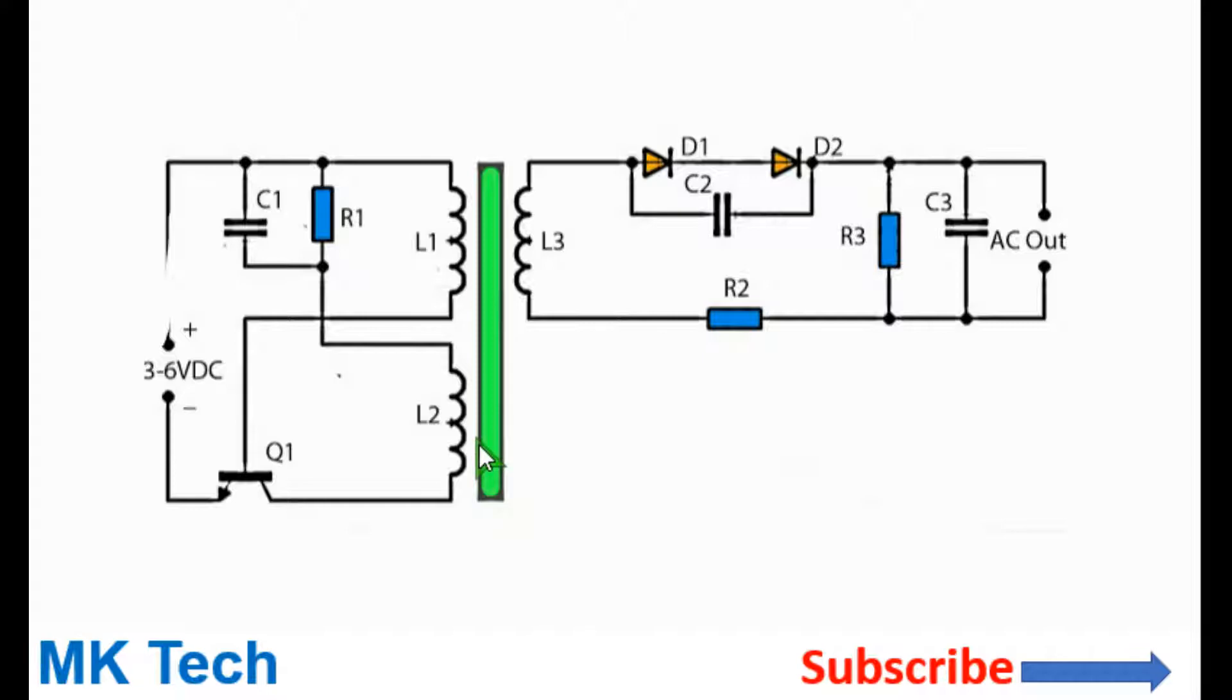This will cause voltage to be induced on the primary side of the positive polarity which will cause the transistor to be further biased. This will cause current to ramp up on the winding L2 until current can no longer increase.